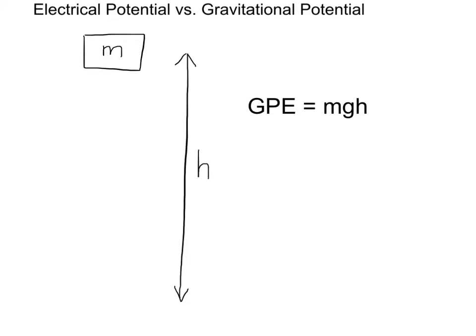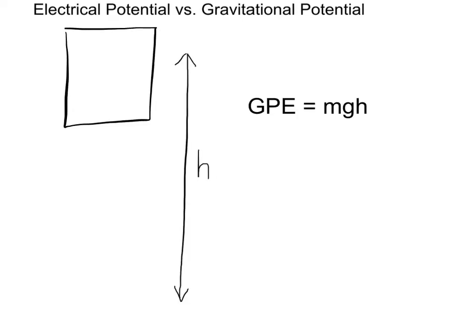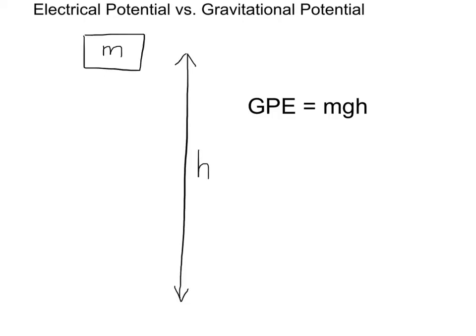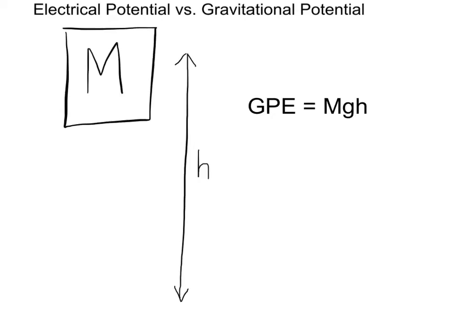Now suppose I replace the mass little m with a larger mass, which I'll call big M. The gravitational potential energy is no longer little mgh — it's now big Mgh. In other words, the gravitational potential energy at a point depends on the mass of the object at that point. Small mass gives small mgh; big mass gives big Mgh.